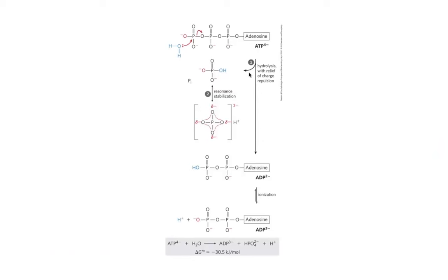Additionally, we can get resonant stabilization. The phosphates are resonance-stabilized — all those oxygens are sharing electrons — but they can do this better if they're not tied to one another. In a free-floating orthophosphate group, where you just have a phosphorus and oxygens not held next to other stuff, you get better resonant stabilization. When you do the hydrolysis, you relieve the charge repulsion between those negatively charged groups, and once you release that orthophosphate, you get this resonant stabilization.